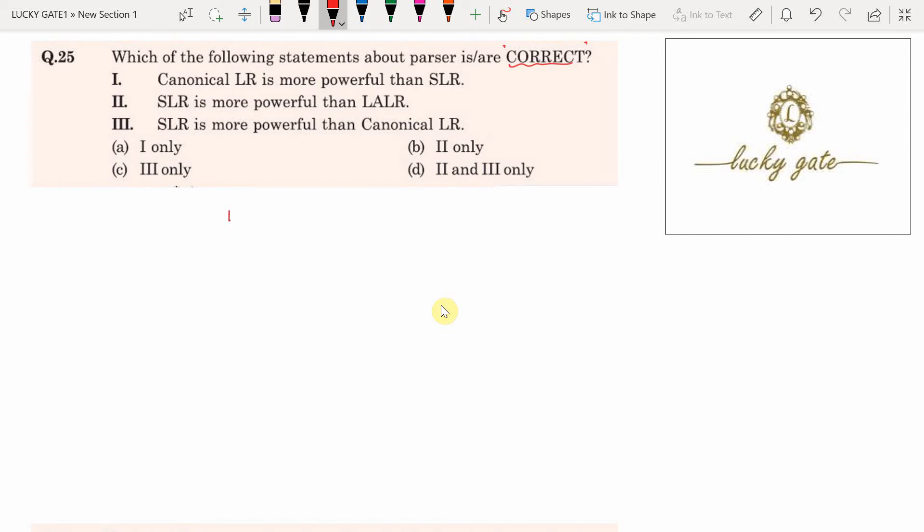Here we have LR of k parsers. These LR of k parsers we call the LR family. In the LR family we have the parsers CLR of 1. In short, CLR of 1 we call LR of 1.